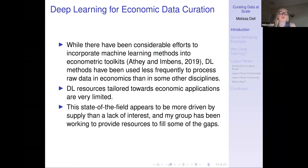Deep learning-based automated approaches allow digitization of data sources that we're already aware of and would like to use but haven't been able to. They can also unlock new types of data. For example, there's the old saying that a picture is worth a thousand words — with deep learning methods it's straightforward to track the dissemination of images across tens of millions of pages of historical newspapers or other historical media, whereas you would never have done that by hand. There's been considerable efforts to incorporate machine learning methods into econometrics, but deep learning methods have been used less frequently to process raw data in economics than in some other disciplines, and deep learning resources tailored towards economic applications are quite limited.